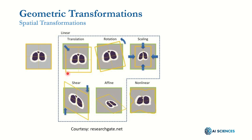The geometric transformations deal with transforming an image, changing it to one of its scaled variants — zoomed in or zoomed out — a rotated variant, a translated variant, a sheared variant, or any combination of these.